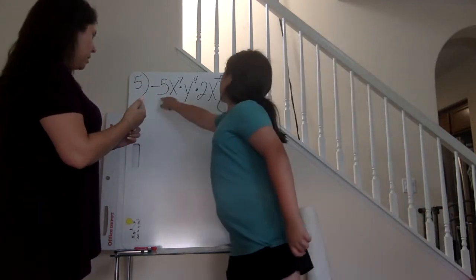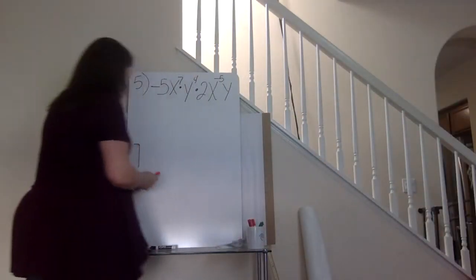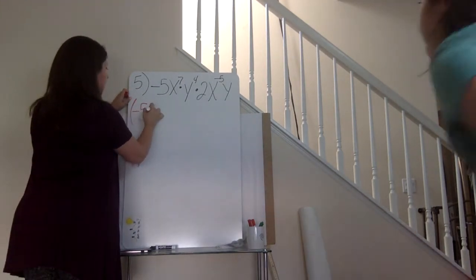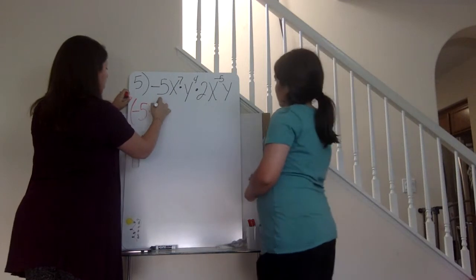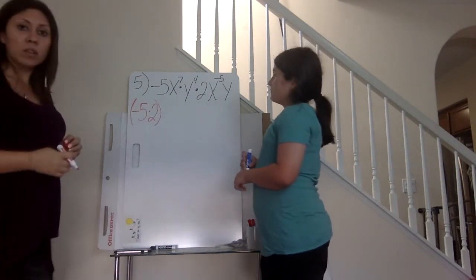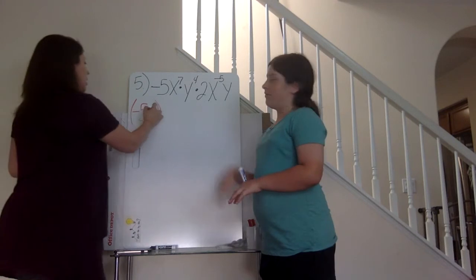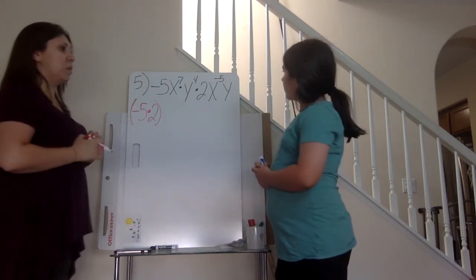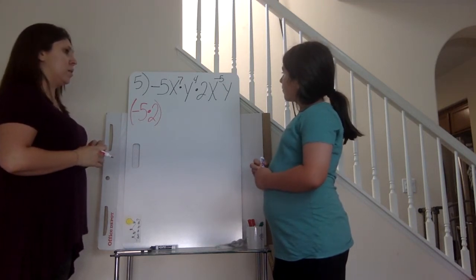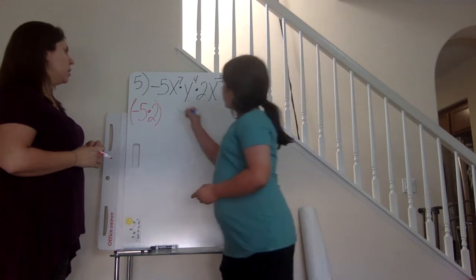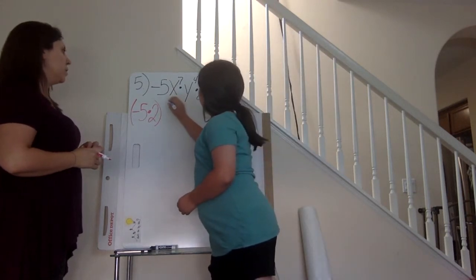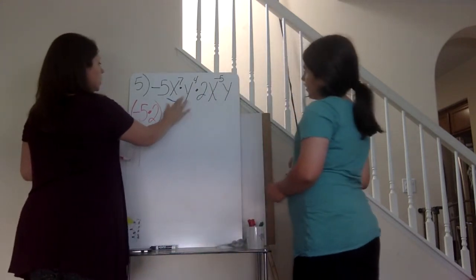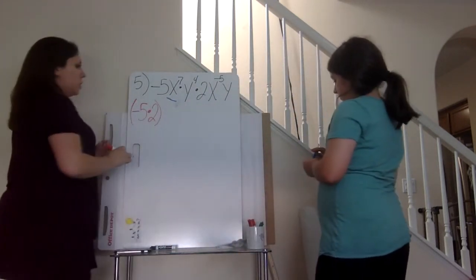We're dealing with these two. I'm dealing with negative five times two. What do they have in common? What bases do they have in common? The x's and the y's. One variable at a time, so we're going to deal with the x's first — underline the other x.